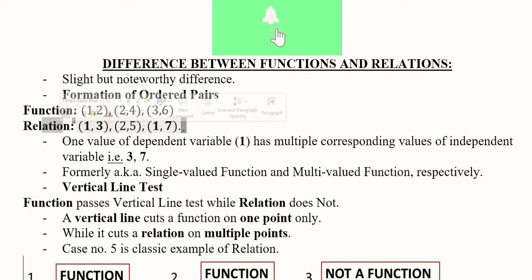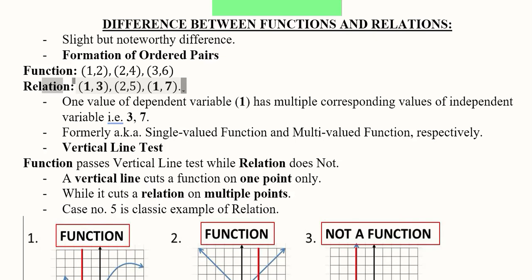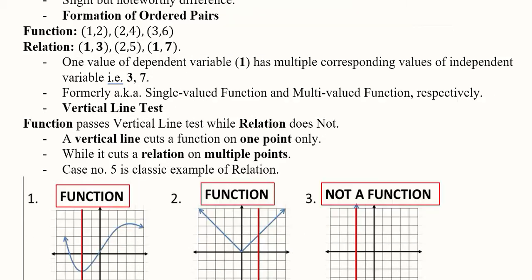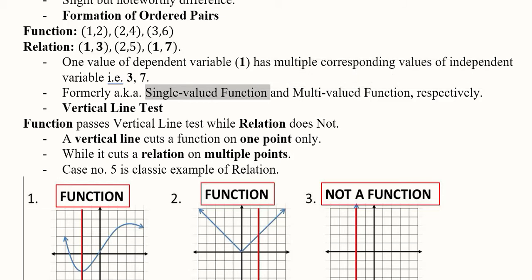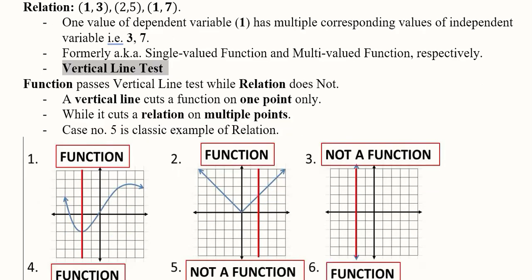We should note that 7 and 3 are elements giving rise to the same value of the dependent variable y, which is equal to 1. The difference in notation is single-valued function versus multi-valued function. A function is basically a single-valued function, whereas a relation is a multi-valued function. This will be clear with the help of a diagram using what is known as the vertical line test.